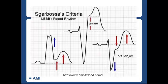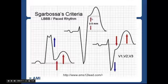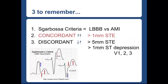Also highly concerning for acute MI. The third criterion: we have discordant waves as expected for a left bundle — negative QRS and positive T wave — but you have an ST elevation that is greater than five millimeters. So basically those are the three Sgarbosa criteria.